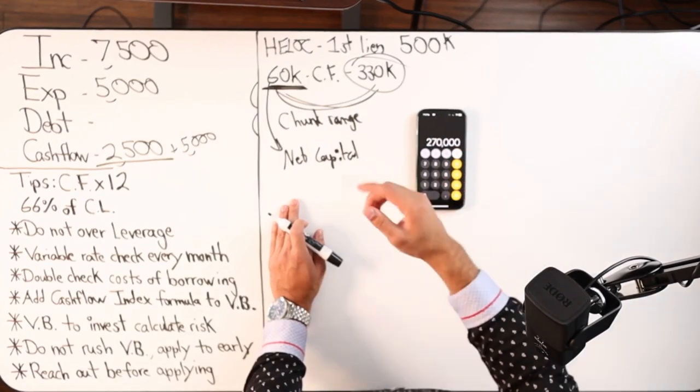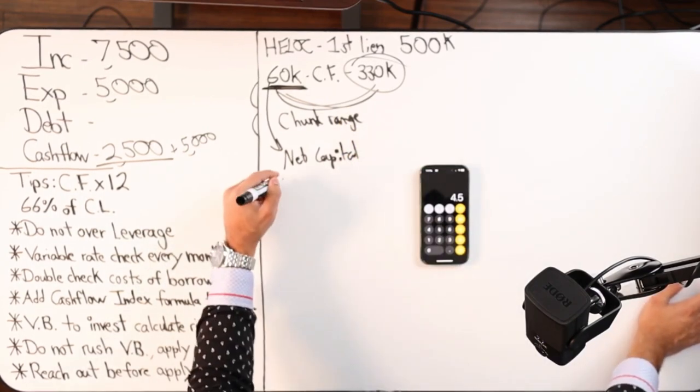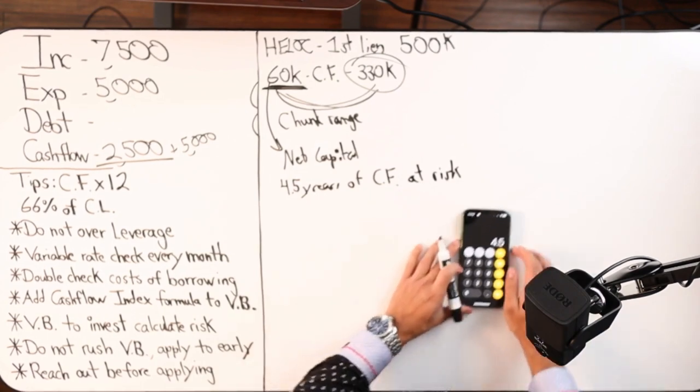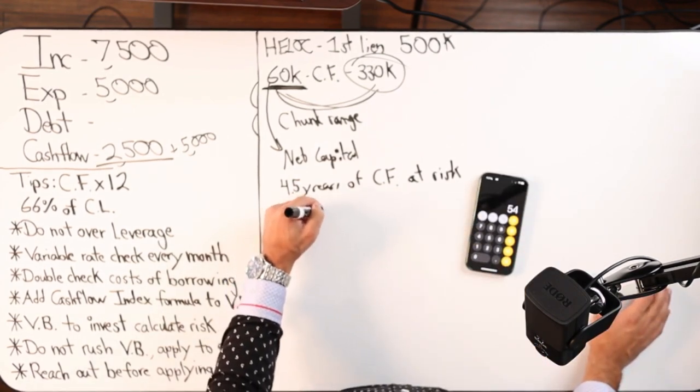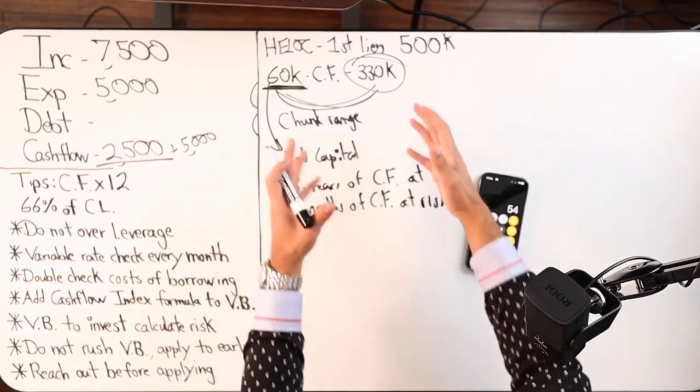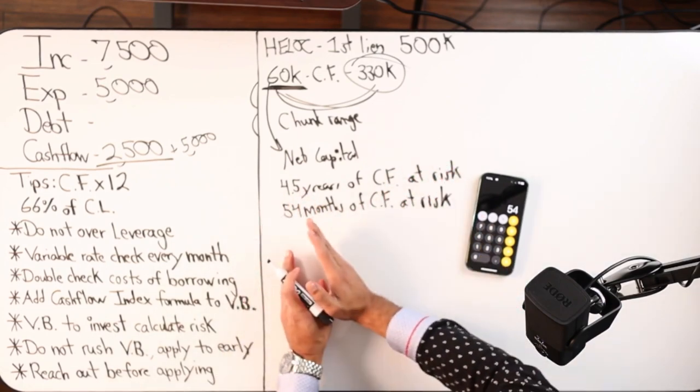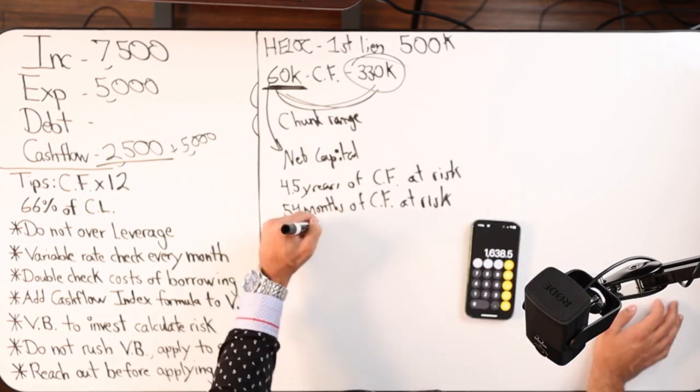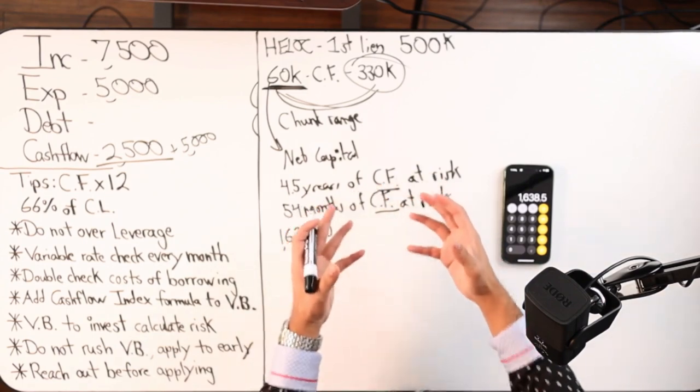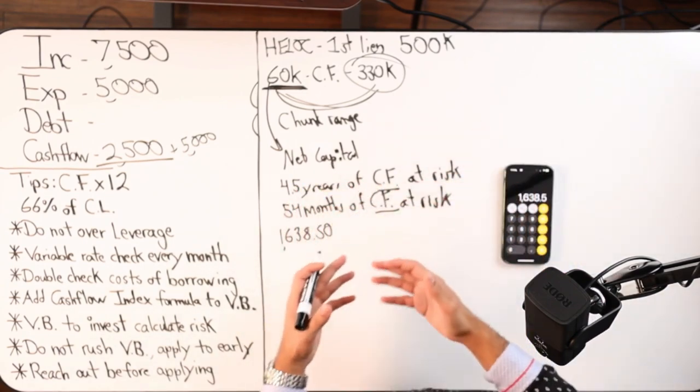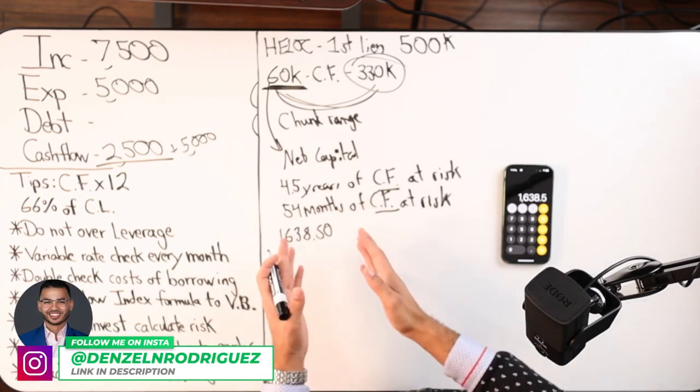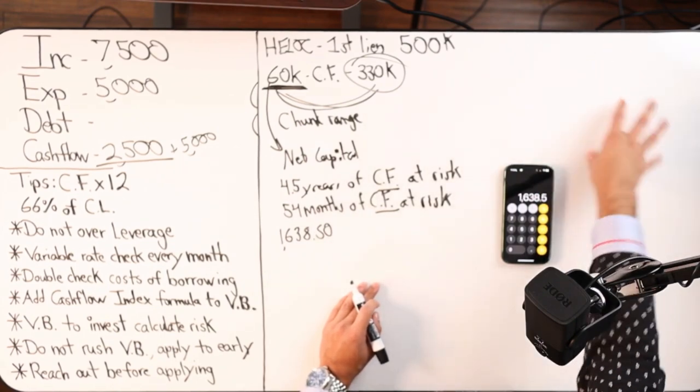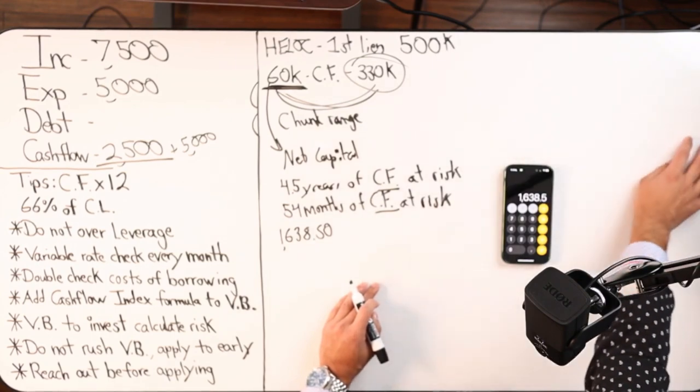So you do the $270,000 divided by 60 grand. What we're saying here is you have 4.5 years of cash flow at risk. You have 54 months of cash flow at risk. So you want to ask yourself, does it make sense for me to put 54 months at risk? Let's say it different ways so it hits different. Are you willing to put $270,000 of future cash flow at risk? Are you willing to sacrifice 1,638 and a half days of your life at risk for this potential investment return where 330 will turn into 660 and double in 4.5 years? Are you willing to take on that risk?